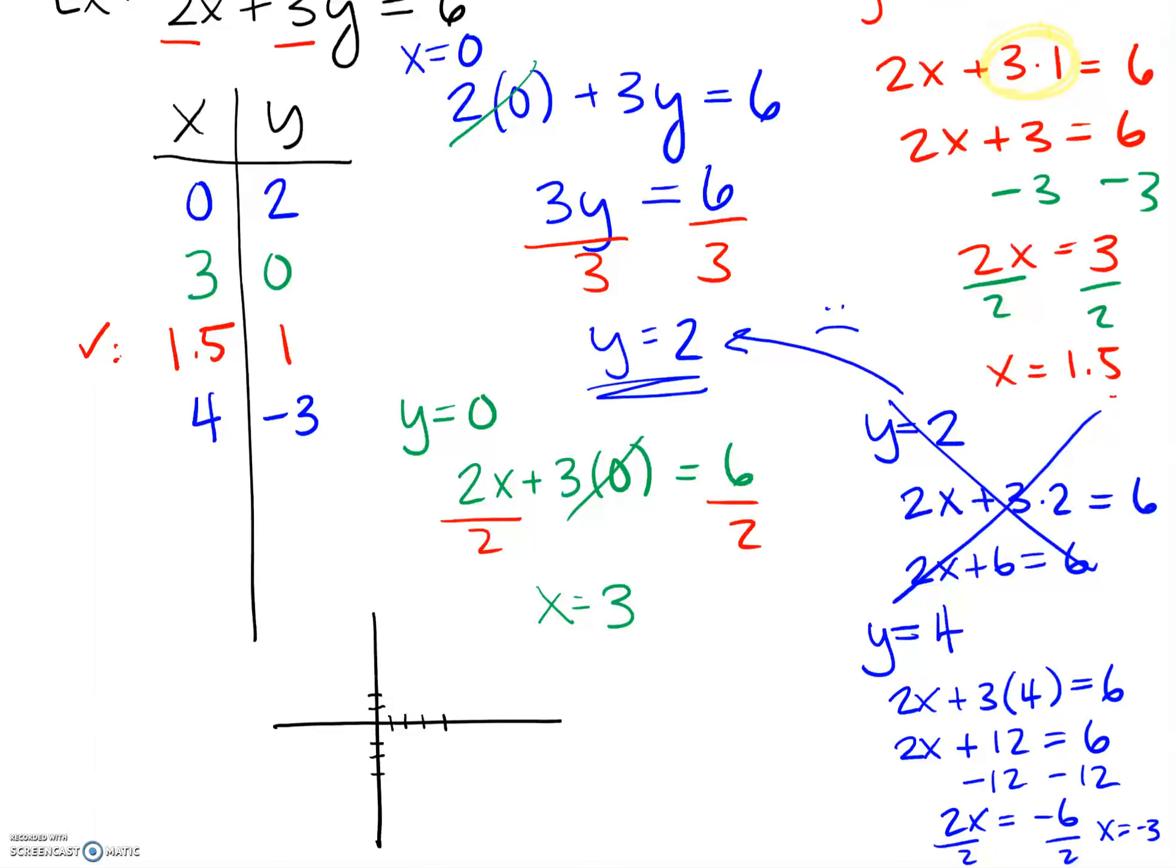So our first point was at zero for the x's, two for the y's. Then we had three, zero. And then we had that weird wonky point that's at one and a half. One and a half is somewhere between one and two comma one, so that does look pretty good in terms of where it fell.